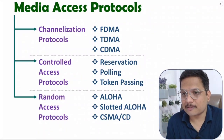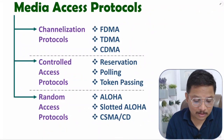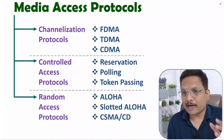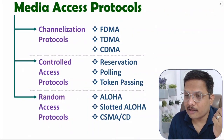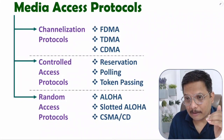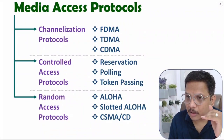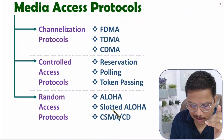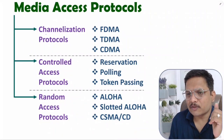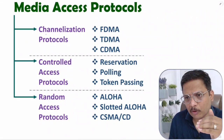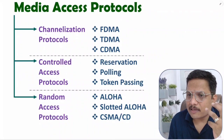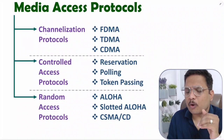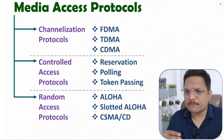The third category is random access protocols. Here users can exchange data randomly — there is randomness. The methodologies include ALOHA, slotted ALOHA, and CSMA/CD. I'll explain all these protocols in great detail with practical examples, which will give you more clarity on how random access and data transfer work.